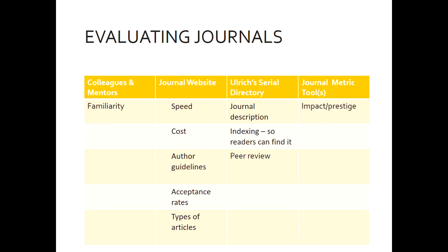You need to find the author guidelines — how your manuscript needs to be formatted, how you need to submit it, and various instructions for you as the author, because that may determine whether you want to publish there or not. You'll find that on the journal's website. Also consider their acceptance rates: is it 90%, 30%, 60%? What's the probability that if you submit something it's going to be accepted? And what types of articles do they accept — case studies, original research, commentaries, editorials? Their website will tell you what types of articles they accept.